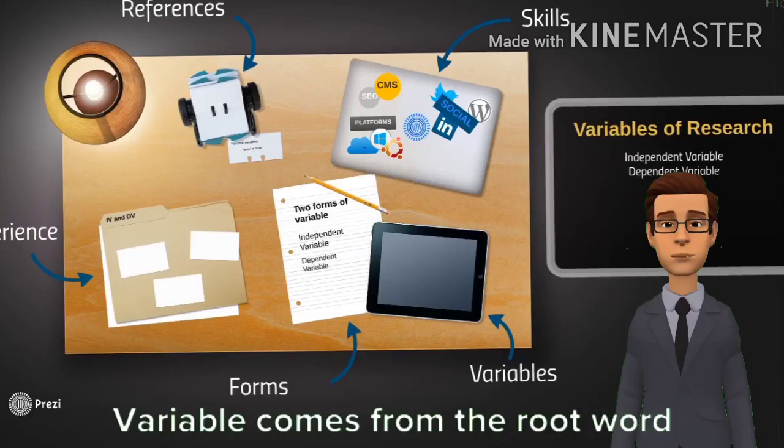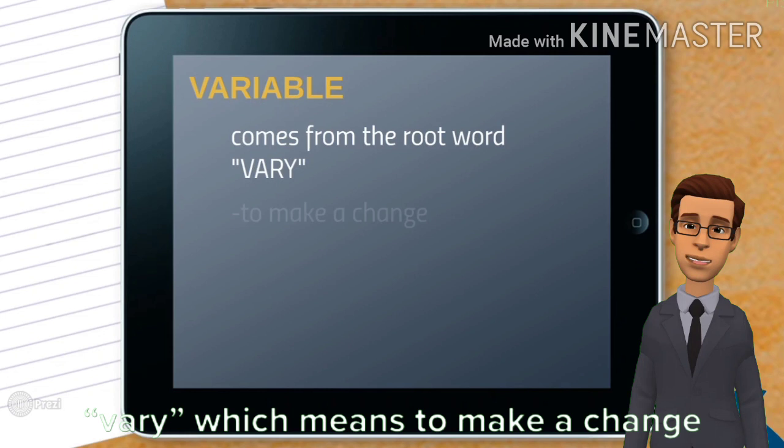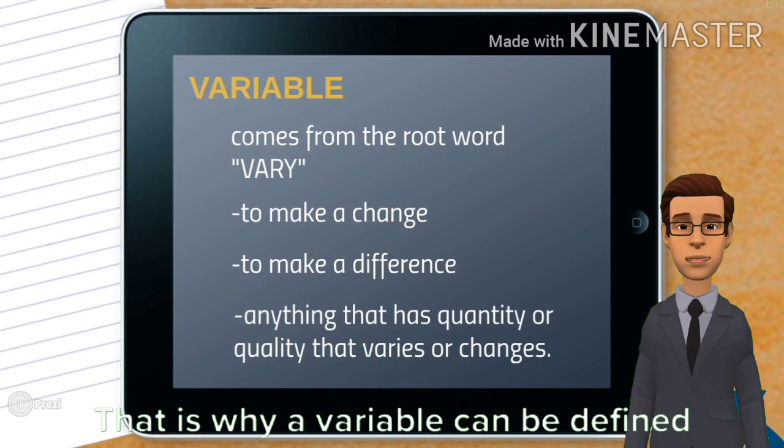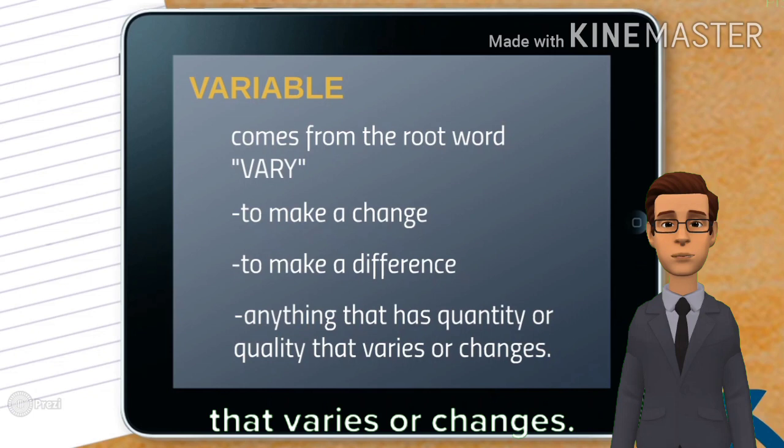Variable comes from the root word vary, which means to make a change or to make a difference. That is why a variable can be defined as anything that has quantity or quality that varies or changes.